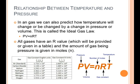And this is given to us using what we call the ideal gas law. So in a gas, we can predict how temperature will change or be changed by a change in pressure and volume. And this is what we call the ideal gas law, which is PV is equal to NRT. And all of those letters you can find down here and what they mean.